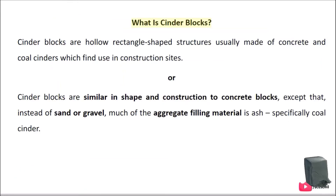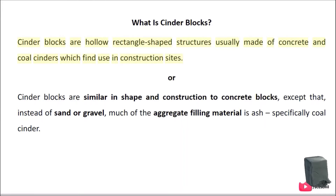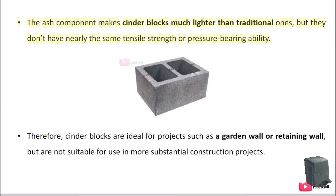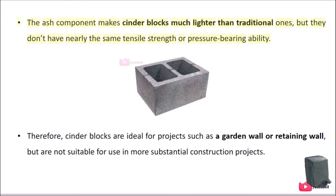What are cinder blocks? Cinder blocks are hollow rectangle shaped structures usually made of concrete and coal cinders which find use in construction sites. Cinder blocks are similar in shape and construction to concrete blocks, except that instead of sand or gravel, much of the aggregate filling material is ash — specifically coal cinder. The ash component makes cinder blocks much lighter than traditional ones.